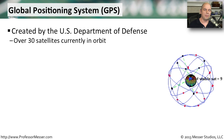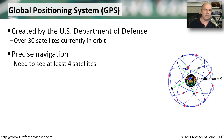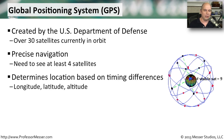One feature I'm always using is the built-in GPS receiver — Global Positioning System — a technology created by the US Department of Defense. There are over 30 satellites constantly moving around the Earth, and I need to see at least four of them to get navigation on my mobile device. With those four, I can determine my longitude, latitude, and altitude, all based on the differences in timing of signals received from those satellites.